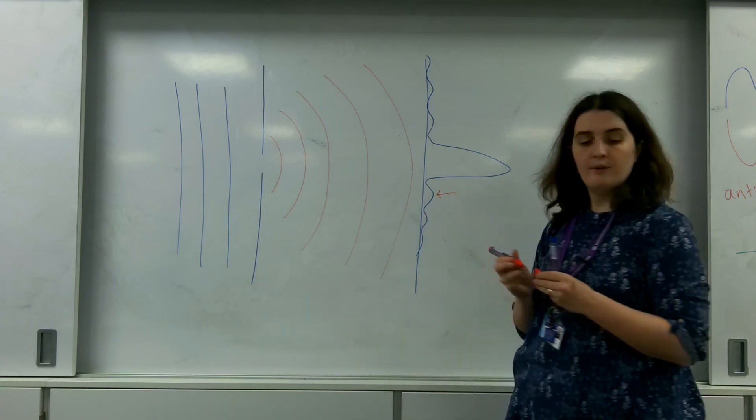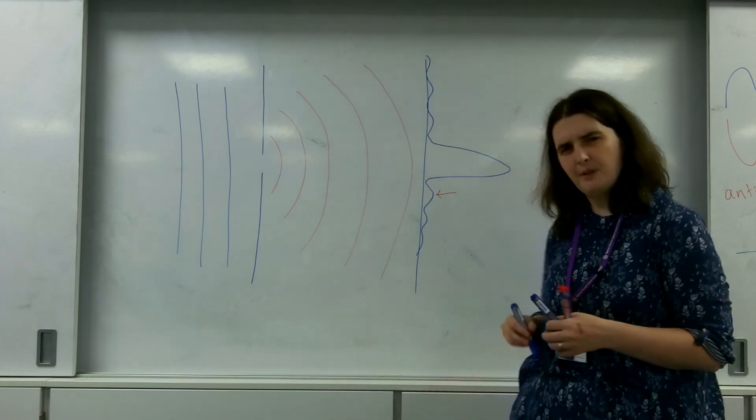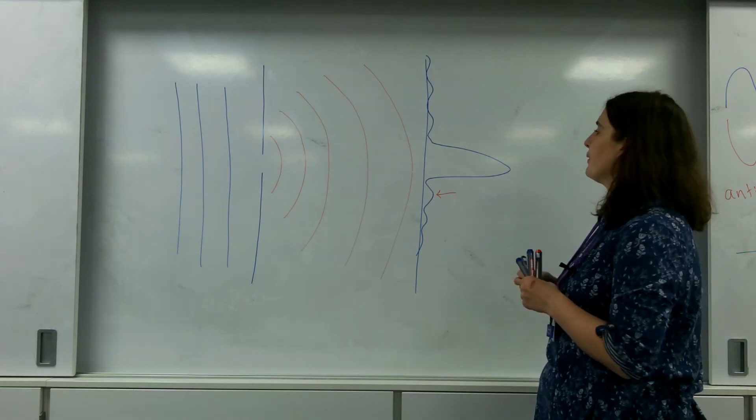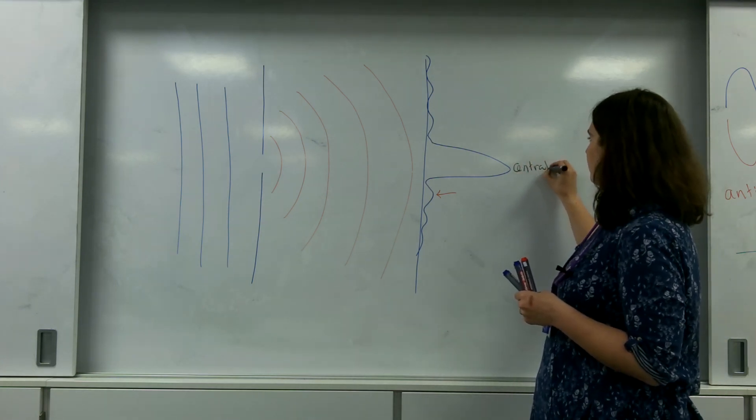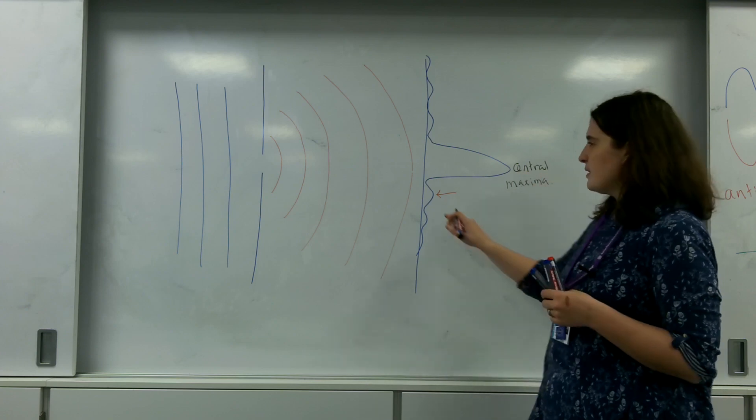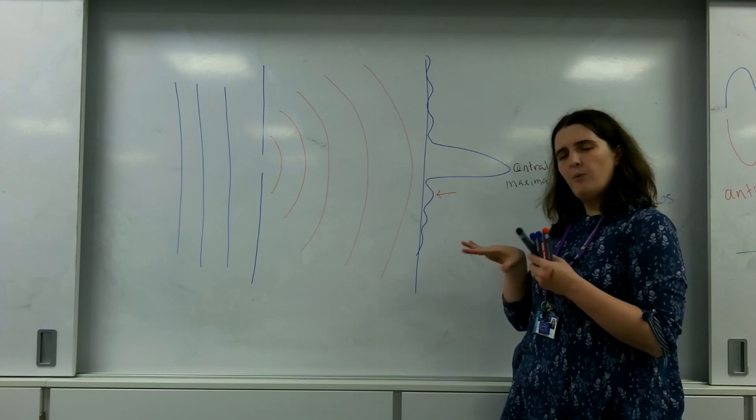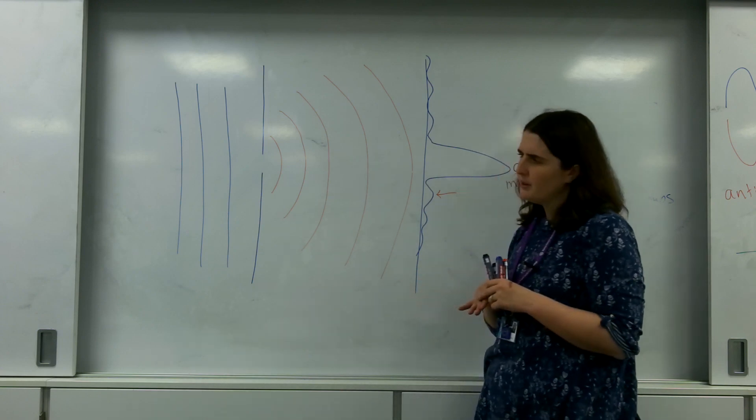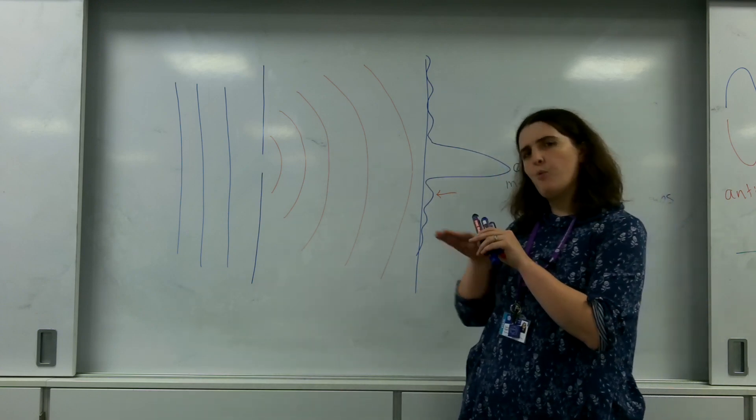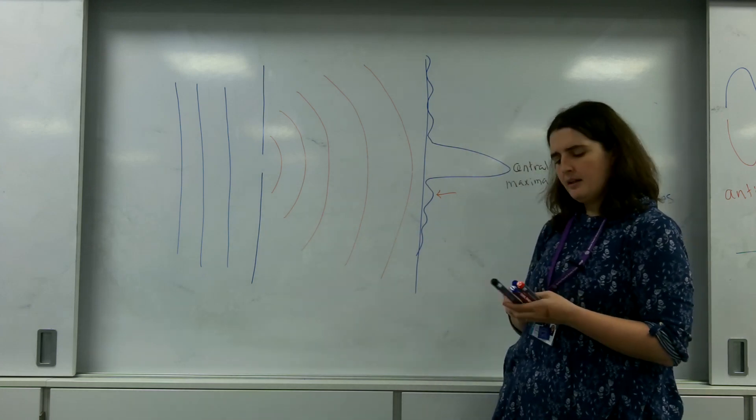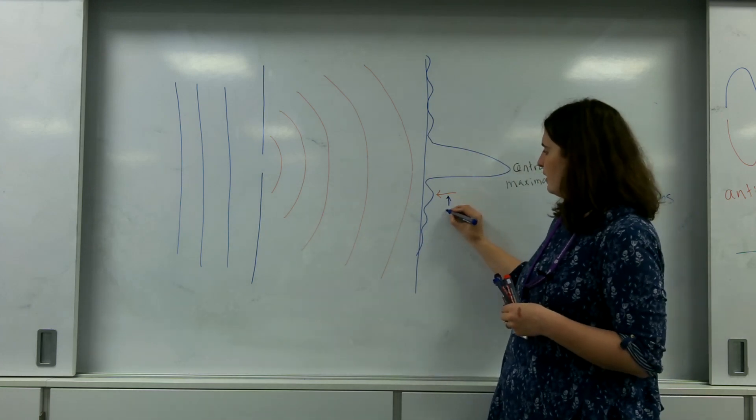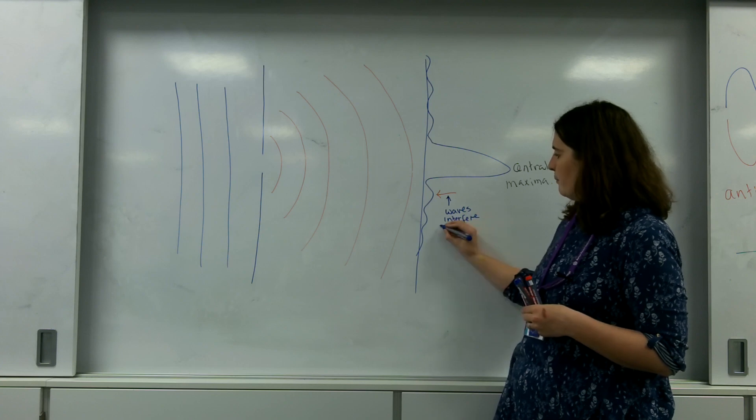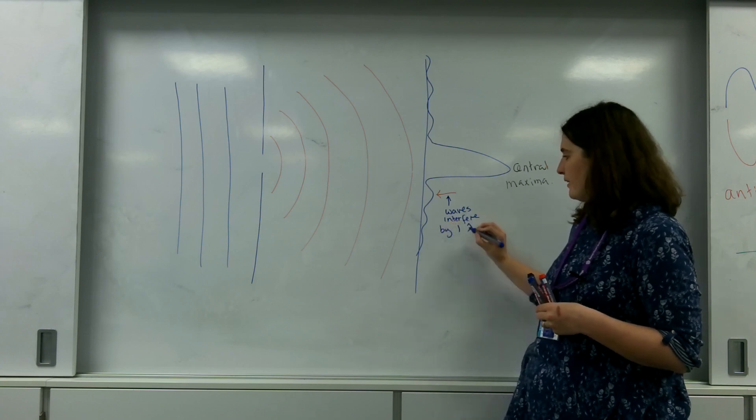At this point here, for example, the first sort of bump that you get after the, what we're going to call the central maxima, so the central bright bit. This bump here is where the waves are actually slightly out of phase with each other. But in fact, they're out of phase by one whole wavelength. So here, the waves interfere by one wavelength, I'm using lambda there.